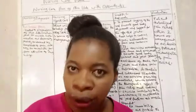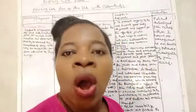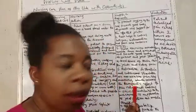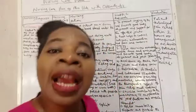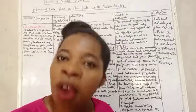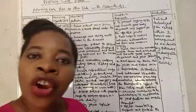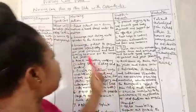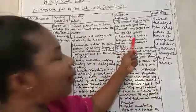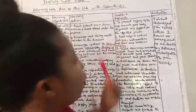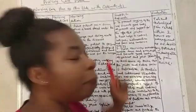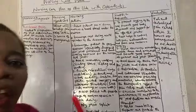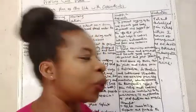Nursing action number one: admit patients on a firm mattress with a board placed under the mattress. Scientific rationale: to prevent sagging of the bed, to promote good body alignment and support for the affected joints. Number two: encourage rest during the acute episodes of the disease. Scientific rationale: rest helps to control fatigue, inflammation and pain, and conserve energy.